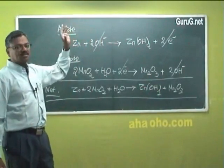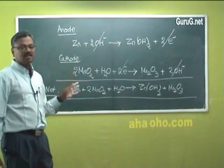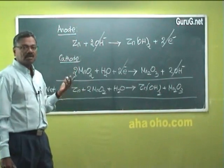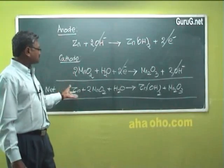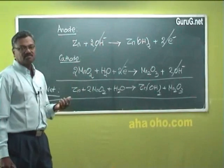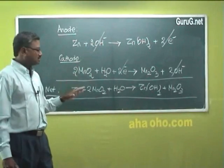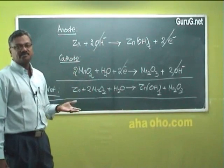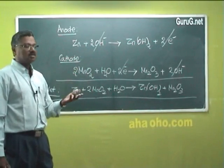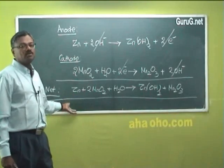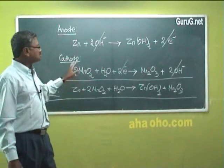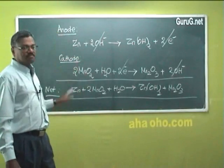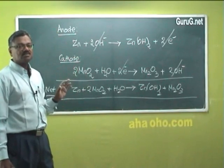The advantage is that zinc never gets dissolved because there is no acidic medium — zinc is present in a hydroxide medium. Therefore there is no dissolution of zinc. It has long shelf life, and there will be no voltage drop. These are the advantages of alkaline batteries.